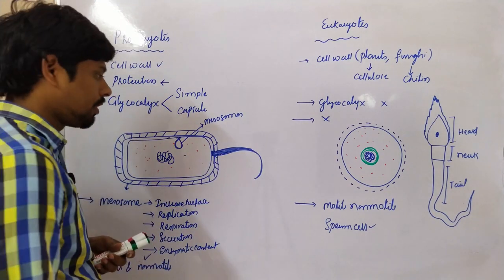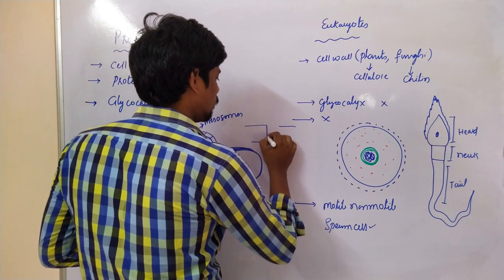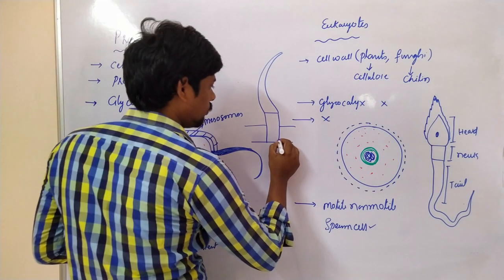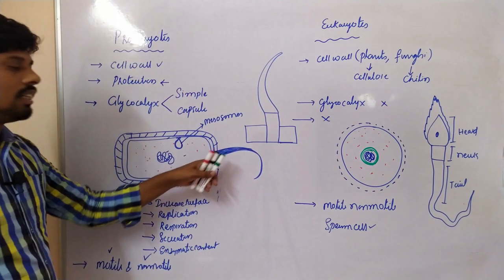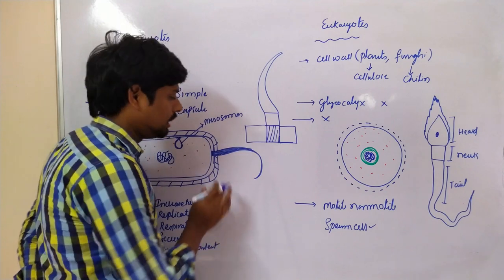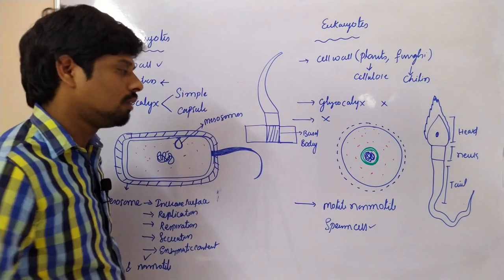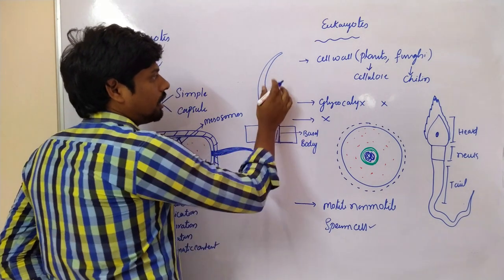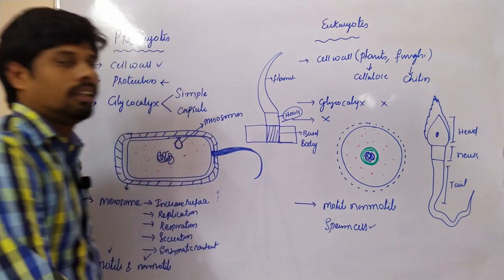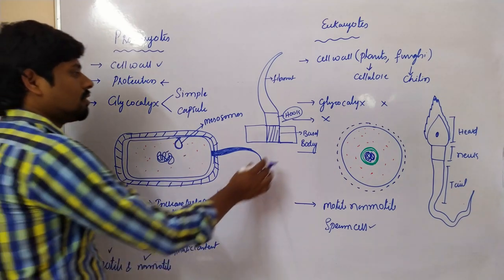Flagella actually contains three important parts. The part embedded in the membrane of the cell is called the basal body. Above the basal body is the hook, and then the filament. So flagella contains three parts: basal body, hook, and filament. If flagella is present, the organisms are motile.